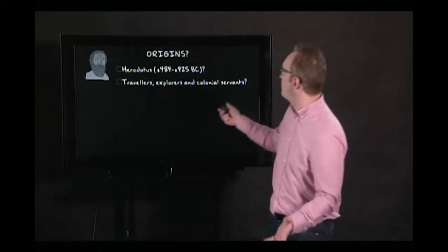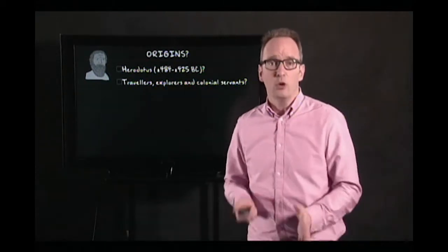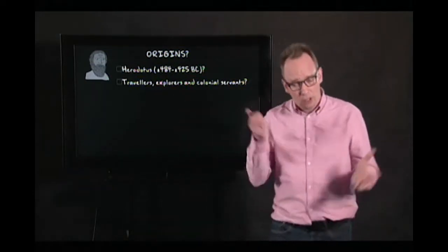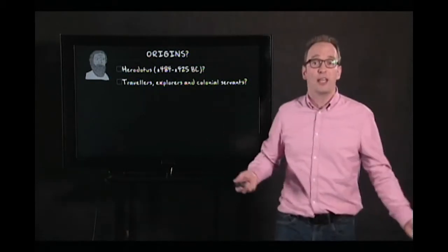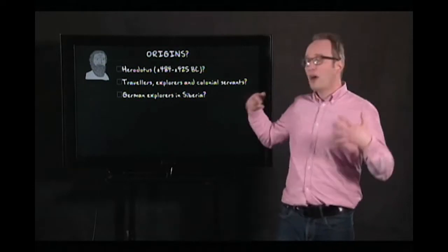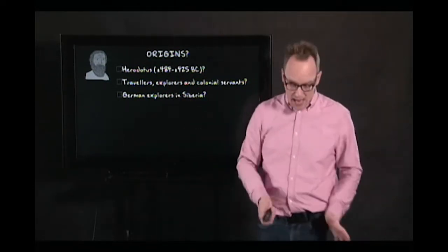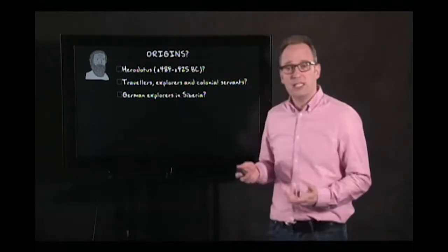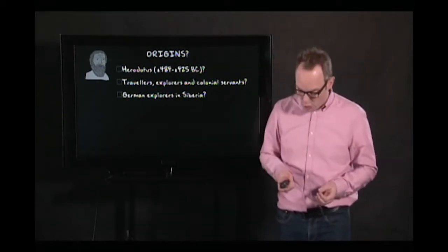Where does this method come from? Some claim Herodotus was one of the first ethnographers — he wrote Historia while traveling through the Mediterranean, speaking, eating, and staying with people. Others point to travelers like Ibn Battuta, who traveled from Morocco throughout Asia, or Marco Polo, or colonial servants like Jakob Hafner. Others claim the first ethnographers were German explorers in Siberia who coined the term ethnography, working for Peter the Great to understand different tribes.